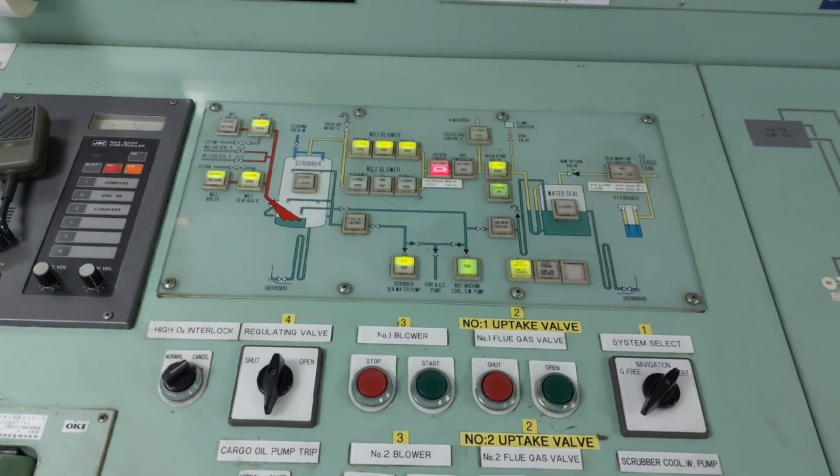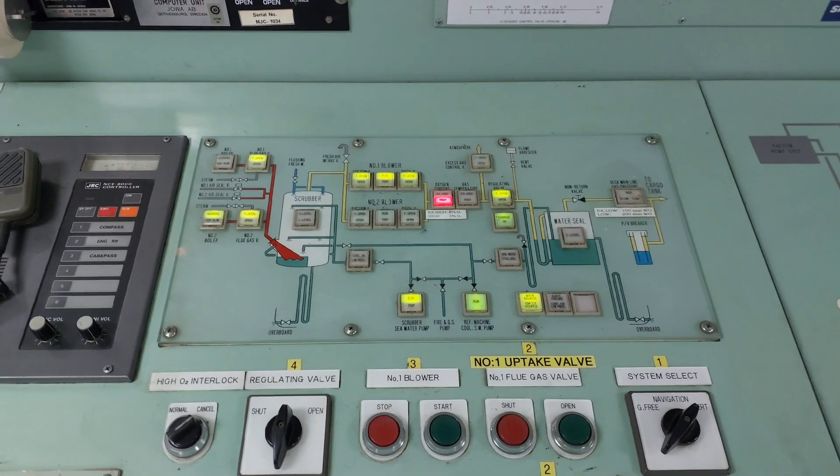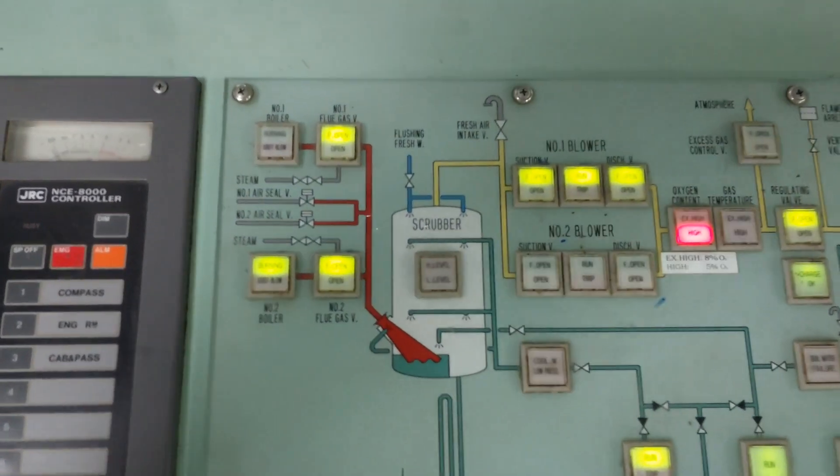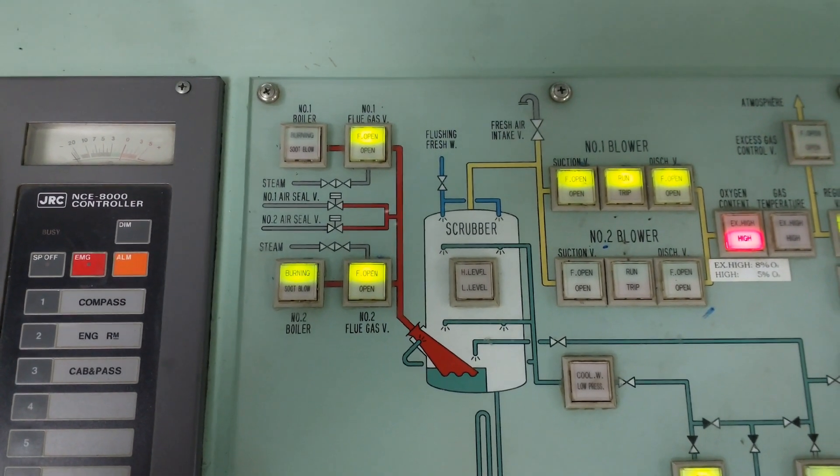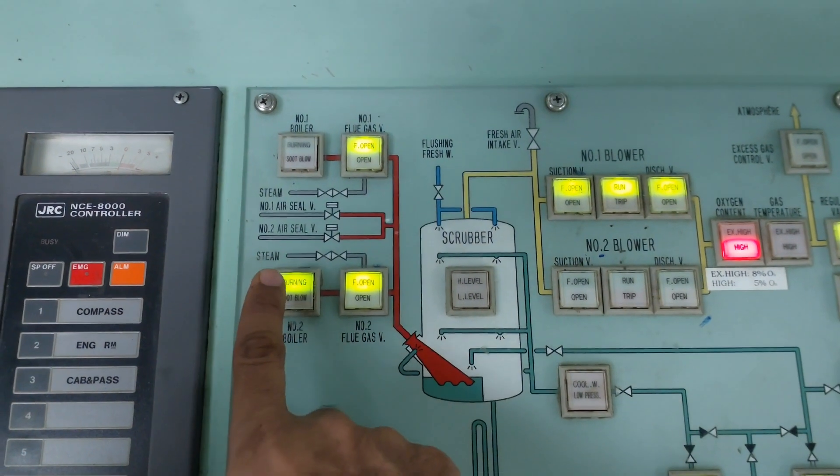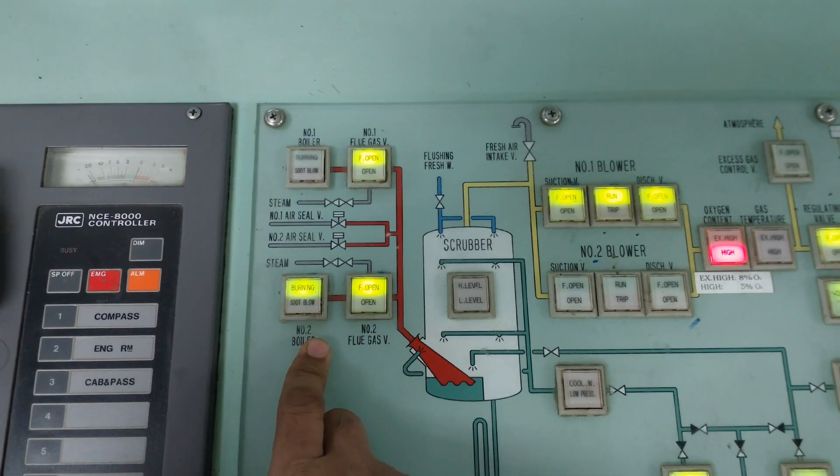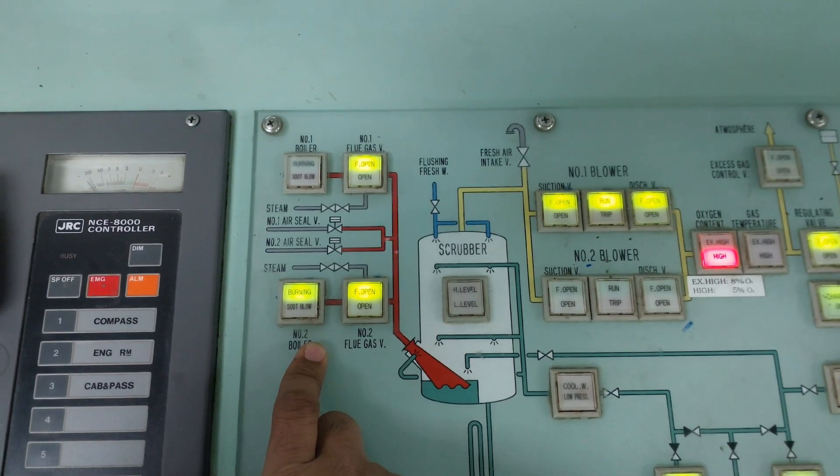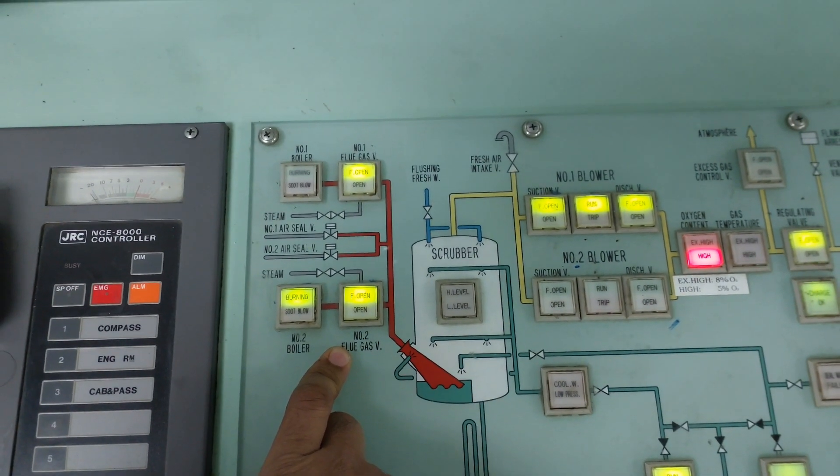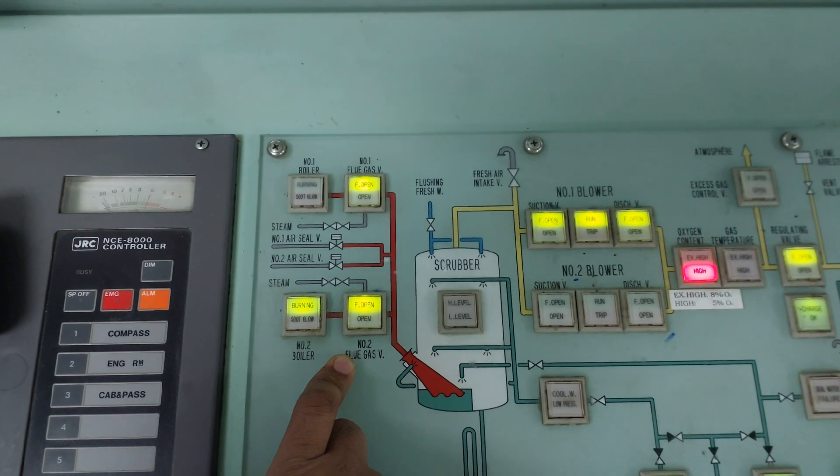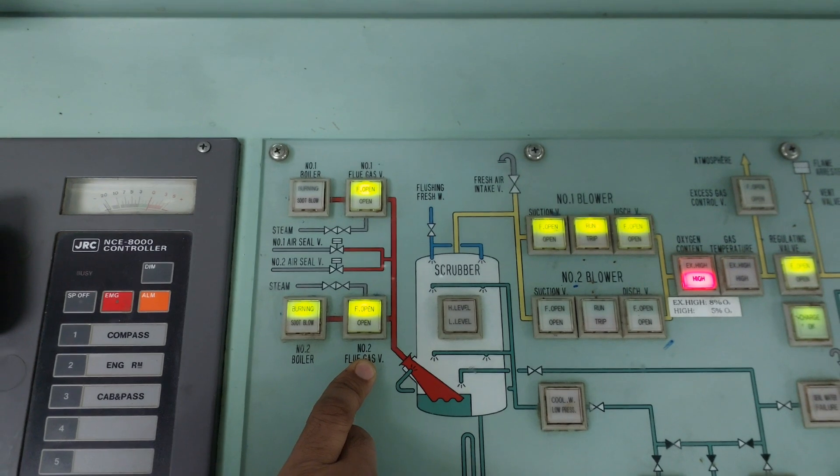Let's learn from the start. You can see there are two boilers. The engineer will start one boiler, for example boiler number two is running. After the boiler's running, normally they will ask us to start this flue gas valve, which is also known as uptake valve. They will ask you to open uptake valve number two. From there, the flue gas will go to the scrubber tower.